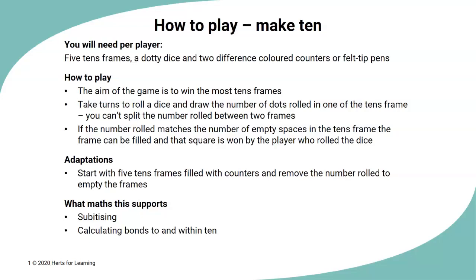And our final game, make ten. So for this game, you'll need five tens frames drawn on a piece of paper, a dotty dice, either two different colored counters or two different colored felt tip pens. The aim of the game is to win as many of the tens frames as you can. The key rule to remember is that you can't split one of the numbers rolled between two tens frames. So for example, if you roll a six, you can't put two in one of the tens frames and four in another of the tens frames. If you roll a number that's too big to put in any of the tens frames, then you would miss a turn. An adaptation that you could make is rather than filling the tens frames is that you could empty the tens frames. So you could start with the tens frames filled with lots of different counters. You could remove the counters and then the person who empties the frame would be the winner.